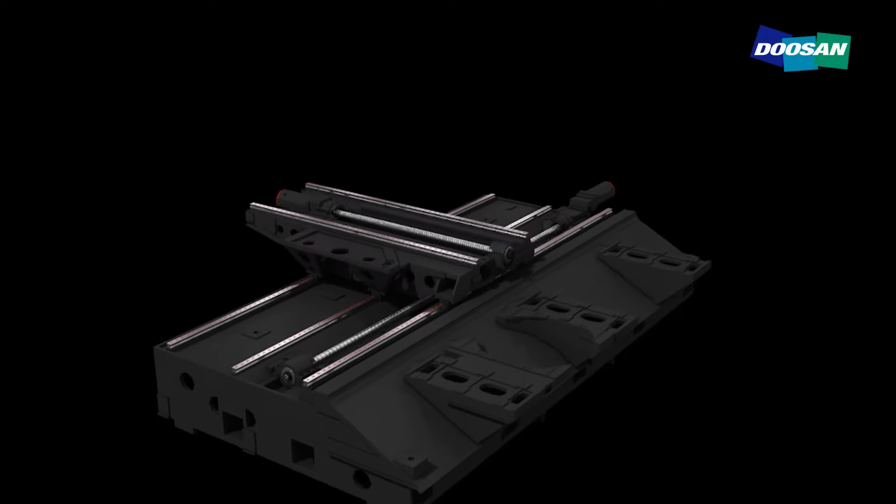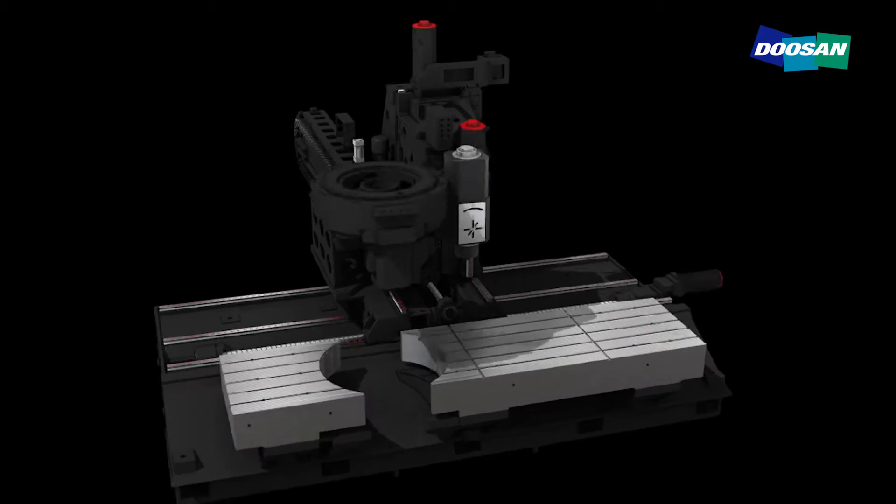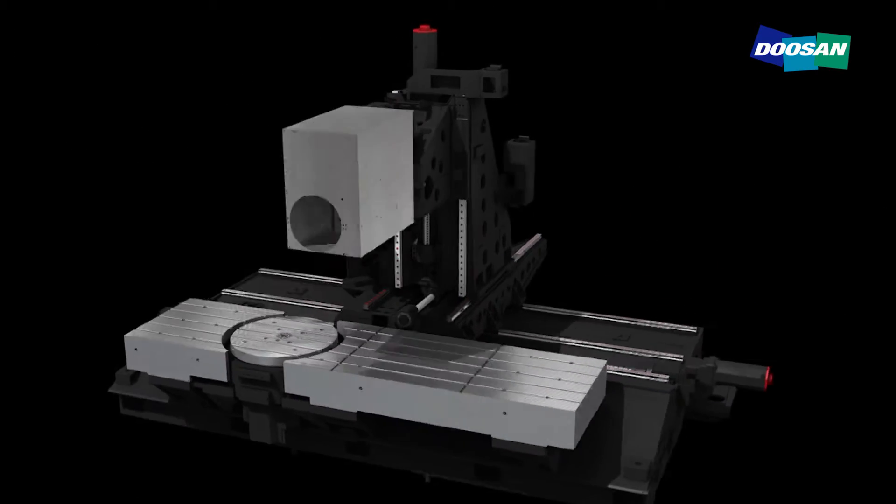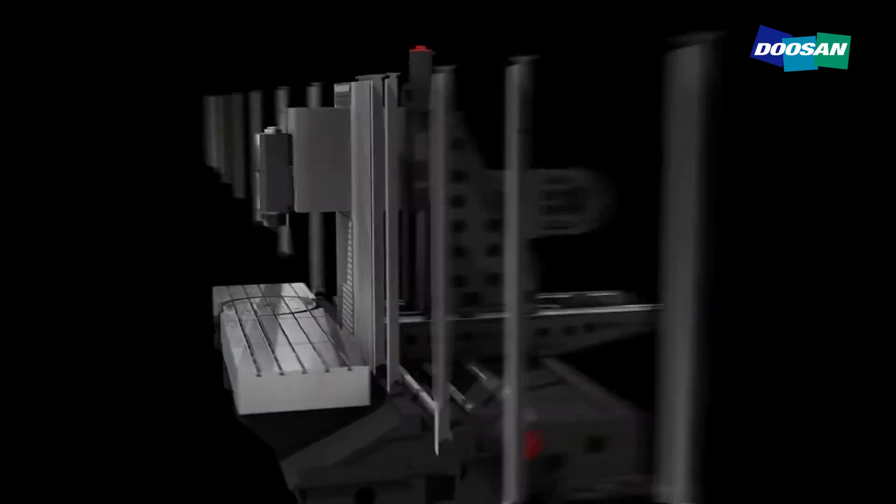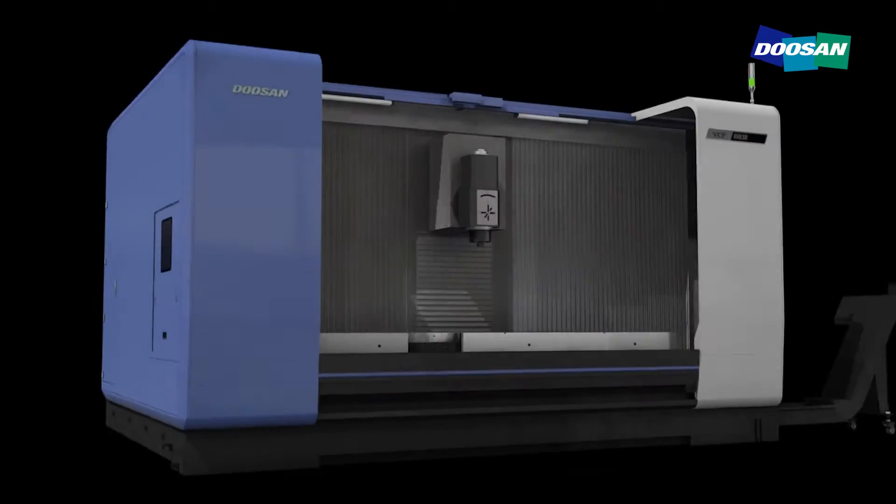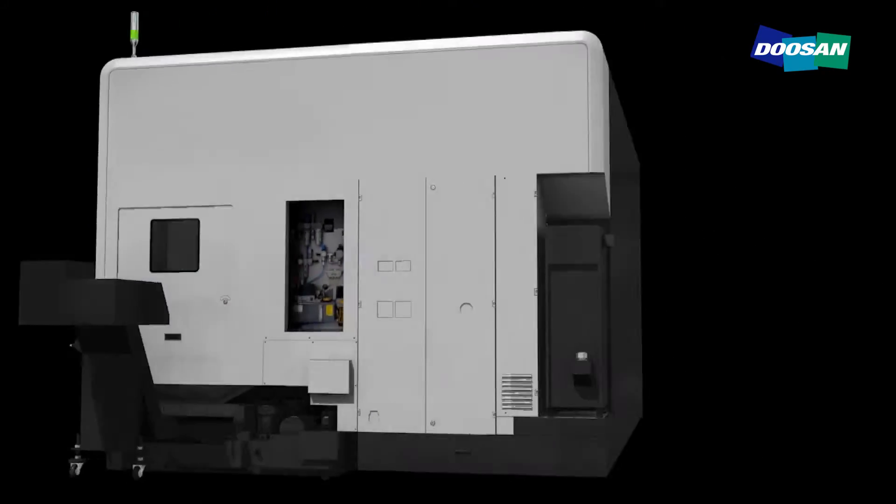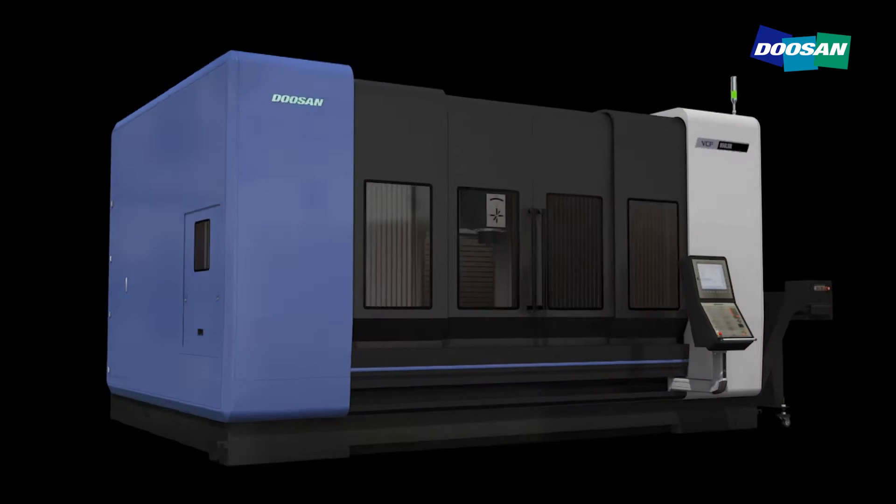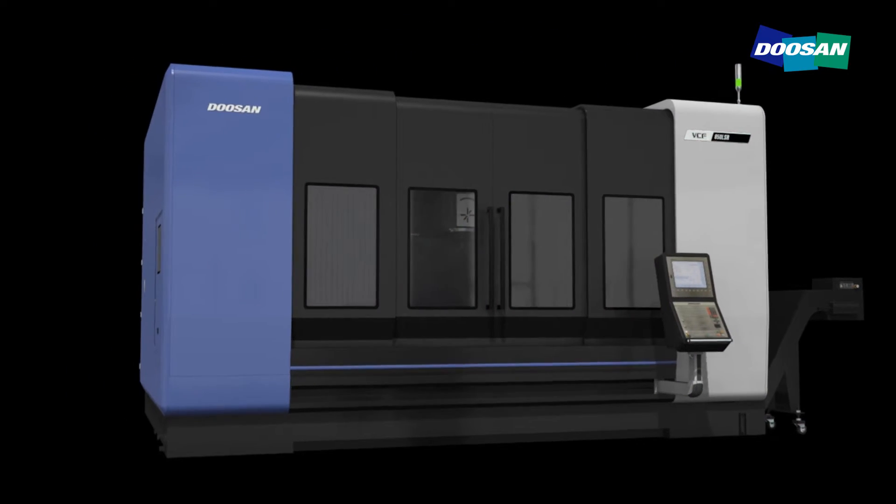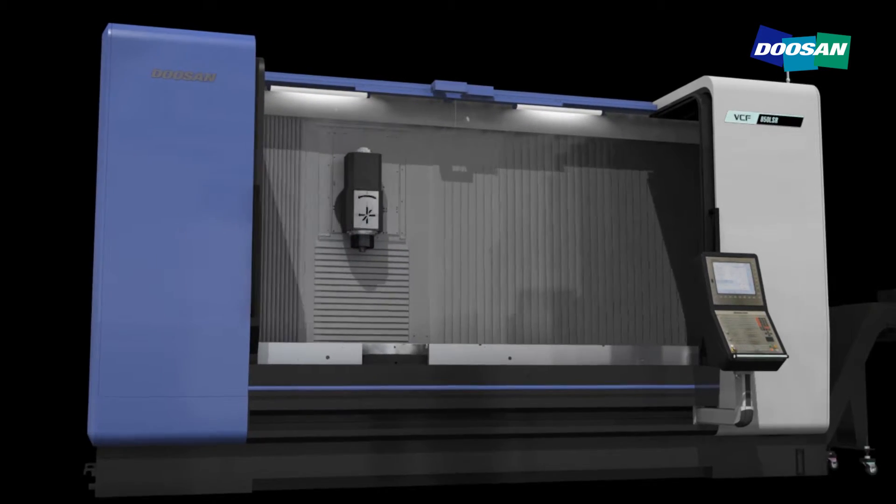This multi-purpose column moving vertical machining center provides a 3 meter long machining area on the X axis and a 3 to 5 axis processing capability through the use of diverse applications. The VCF 850 series of column moving machine tools is equipped with an embedded type rotary table, a top mounted type rotary table and a 110 degree rotation tilting head, guaranteeing optimum versatility and the highest productivity.